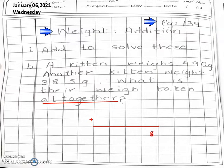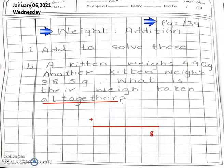Question 1 is: add to solve these. Question A has been done for you, so we will do part B. The question is: a kitten weighs 490 grams. G stands for grams. Another kitten weighs 385 grams. What is their weight taken all together? Dear students, where the word 'all together' comes, it means that we have to add. We have to do addition.